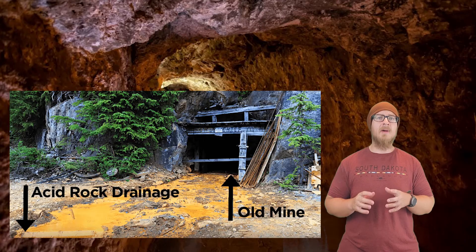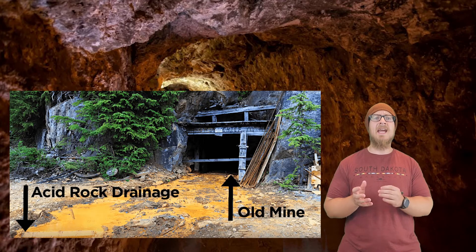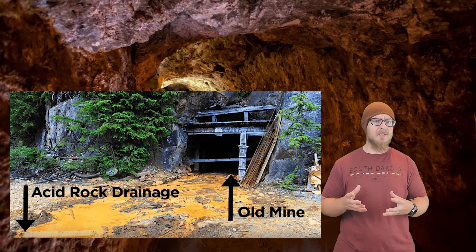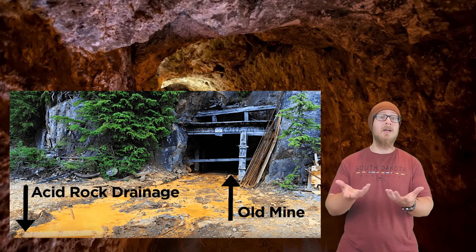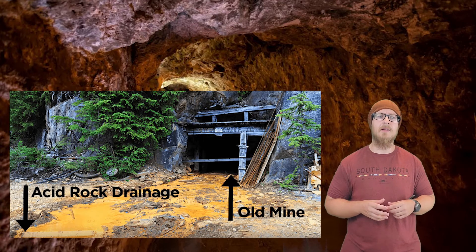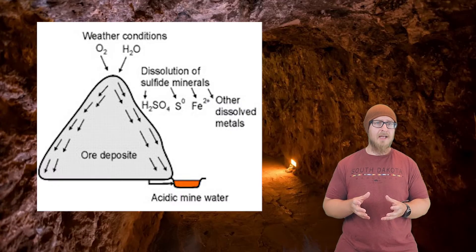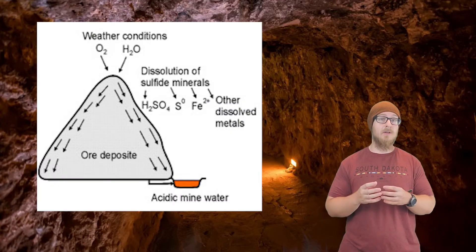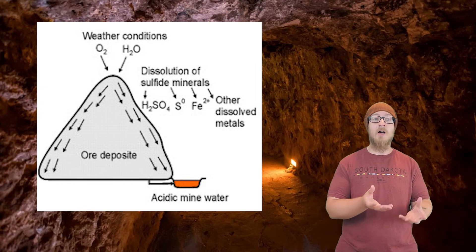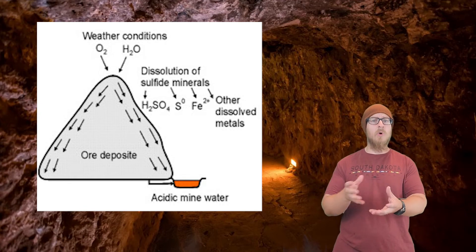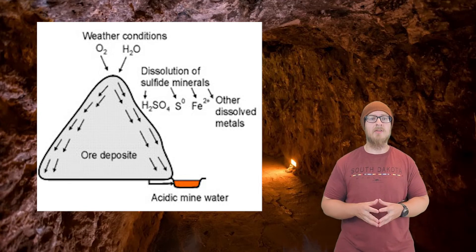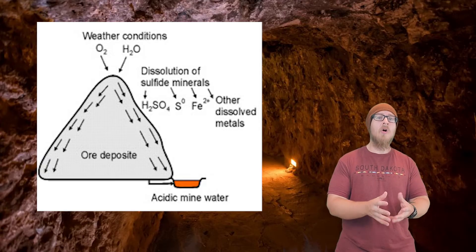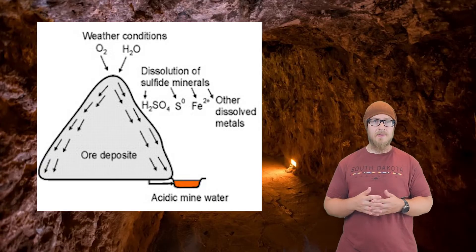One final issue with mines I want to bring to your attention is acid mine drainage. Many rocks contain some deposits of pyrite, or iron sulfide. When iron sulfide is exposed to air and water, it forms sulfuric acid, which can run off and affect the pH of water streams, which negatively impacts wildlife. This can result from the mine directly, or it can result from the tailings.